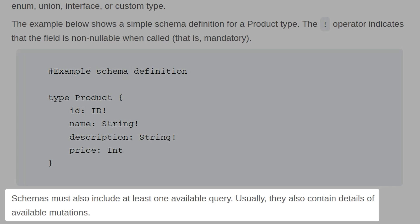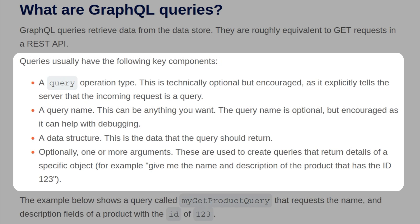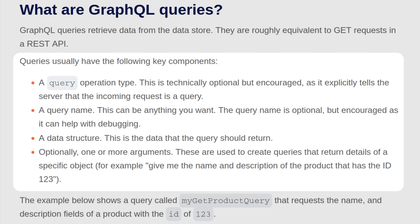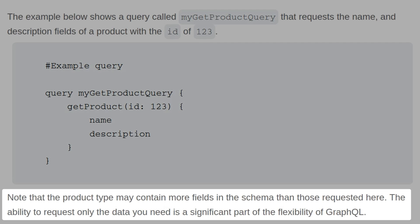Schemas must also include at least one available query and usually contain the details of available mutations. GraphQL queries retrieve data from the data store — they are roughly equivalent to GET requests in a REST API. Queries usually have the following key components: a query operation type, which is technically optional but encouraged; a query name, which is also optional but helps with debugging; a data structure defining the data the query should return; and optionally, one or more arguments used to return details of a specific object, for example the name and description of a product with ID 123.